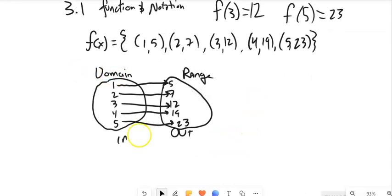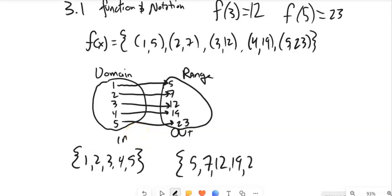If I were to list my domain, I would say it is the set of numbers, which is 1, 2, 3, 4, 5. And if I list my range, it's the set of numbers, which is 5, 7, 12, 19, 23. This is my domain. This is my range.